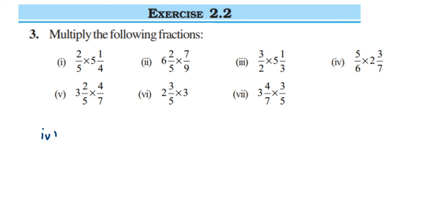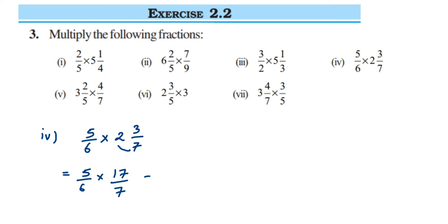Fourth sub-question: 5/6 multiplied by 2³/7. Open the mixed fraction: 7 times 2 is 14, plus 3 is 17, so 17/7. We cannot cancel any numbers, so multiply: 5 times 17 is 85, and 6 times 7 is 42, giving 85/42. Converting to a mixed fraction: 42 twos are 84; to get 85 we add 1 more. So the answer is 2¹/42.